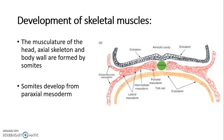Now coming to the development of the skeletal muscles. The musculature of the head, axial skeleton, and body wall are formed by somites. Somites develop from paraxial mesoderm. This paraxial mesoderm gives rise to somites on either side of the neural tube.